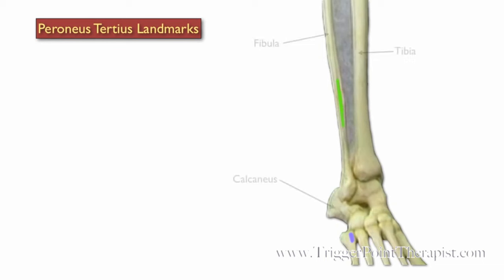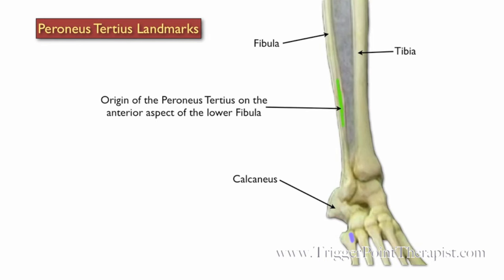Now we take a look at the Peroneus Tertius landmarks. Again, you'll see the tibia, the fibula, and the calcaneus. The Peroneus Tertius originates on the anterior aspect of the lower part of the fibula and inserts on the fifth metatarsal bone.